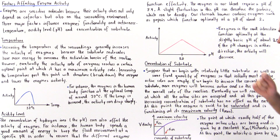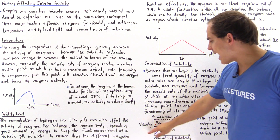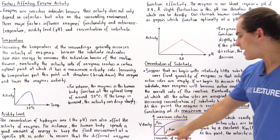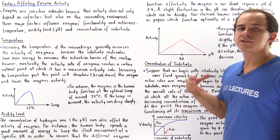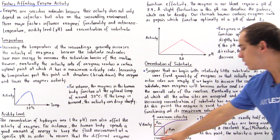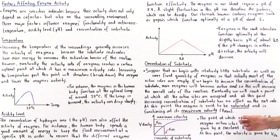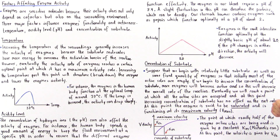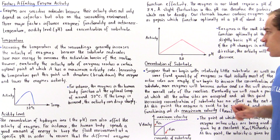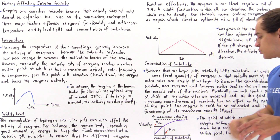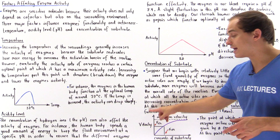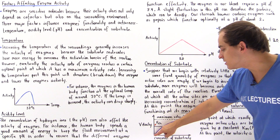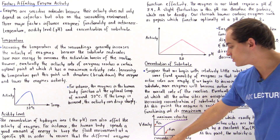Let's take a look at the following diagram. The y-axis represents the velocity — basically another way of saying the rate or activity of that enzyme. The x-axis represents the concentration of substrate. As we go right along the x-axis we increase concentration, and as we go up along the y-axis we increase velocity. Initially, we have a relatively linear relationship between the concentration and the velocity.